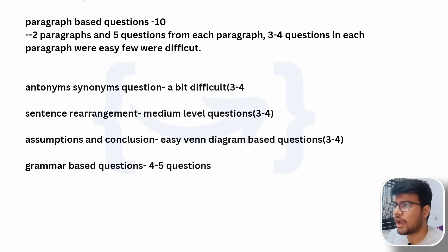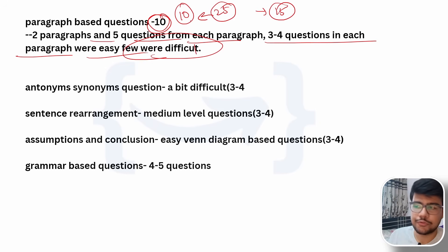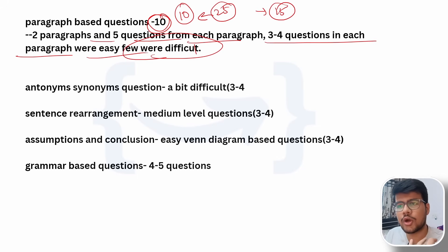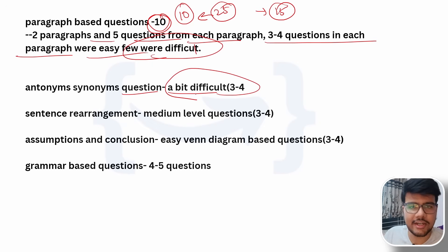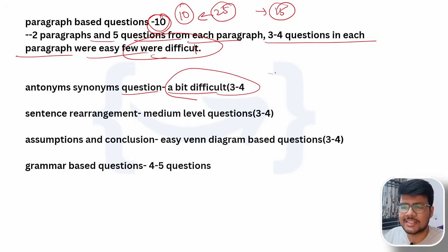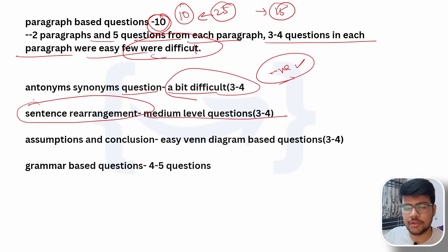For verbal ability: paragraph-based questions were 10 out of 25 total — two paragraphs with five questions each. Three to four questions per paragraph were easy and a few were difficult, such as finding synonyms or antonyms of uncommon words not easily found in the paragraph. If you are a good reader these will be manageable. There is no negative marking, so in the worst case you can still guess. Sentence rearrangement was medium level — long jumbled sentences that you need to arrange.